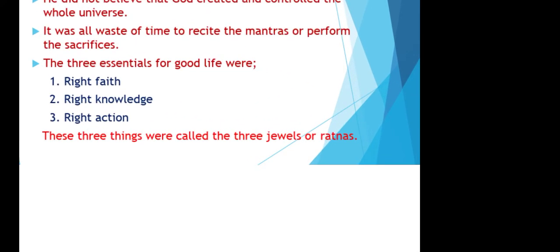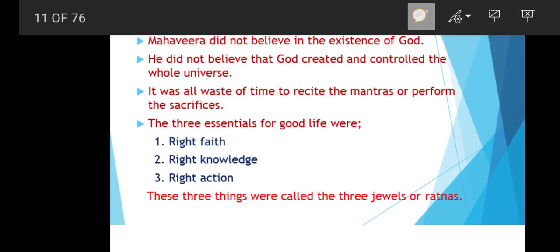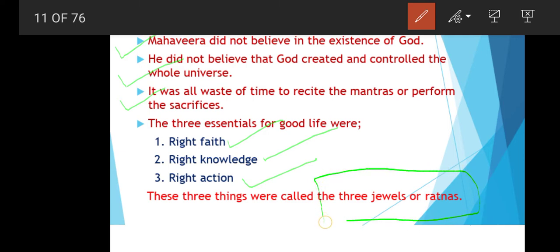Next is the broader message of Lord Mahavira to the world. First, he did not believe in the existence of God or that God created and controlled the universe. He said it was a waste of time to recite mantras or perform sacrifices — making Jainism completely opposite to Hinduism in this regard. The three essentials he taught were: the right faith, right knowledge, and right action — called the three jewels or three ratnas.